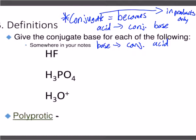So it's saying give the conjugate base. If it's telling us to give the conjugate base, what are we starting with? Acids, right? Acids become conjugate bases. So HF — that's an acid. What will be the conjugate base? First off, acids by definition, what do they do?